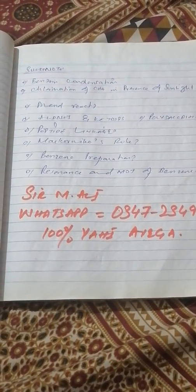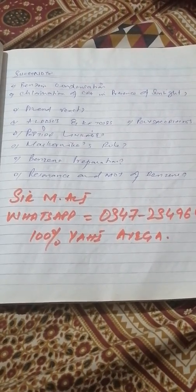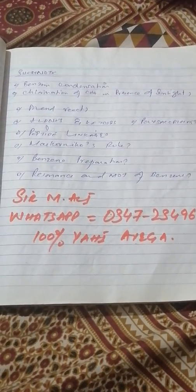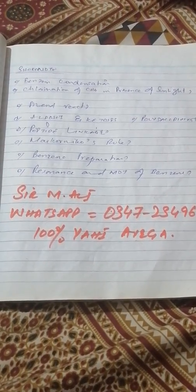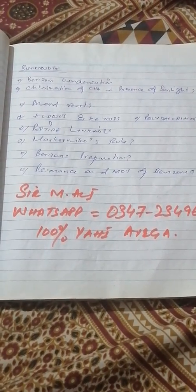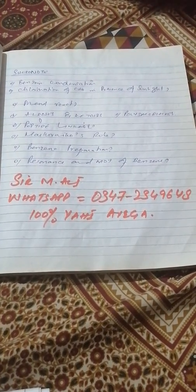Short notes section: benzene condensation, chlorination of CH₄ in the presence of sunlight, phenol reactions, aldoses and ketoses, polysaccharides, peptide linkage, Markovnikov's rule, benzene preparation, resonance and molecular orbital theory of benzene. If you do my paper — math, physics, or organic chemistry — you will get 90 percent marks. I always guarantee the paper will be 100 percent from my paper. Please share with all students so everyone can take advantage. You may ask me any question on my personal number without hesitation. InshAllah, Allah bless you.